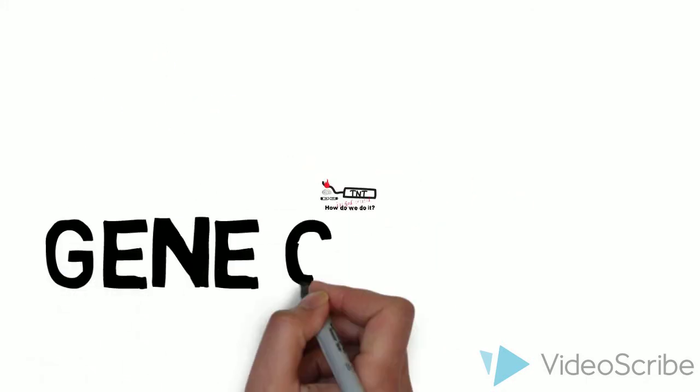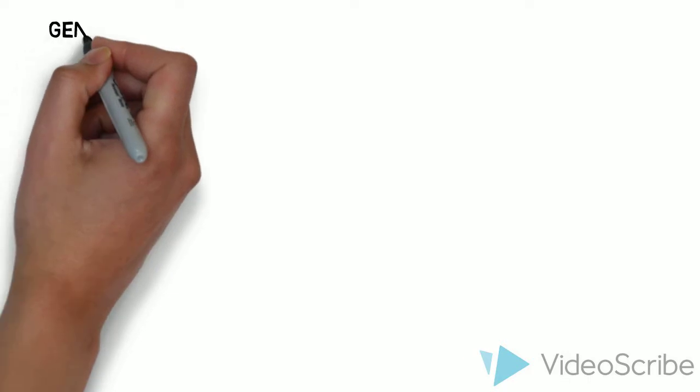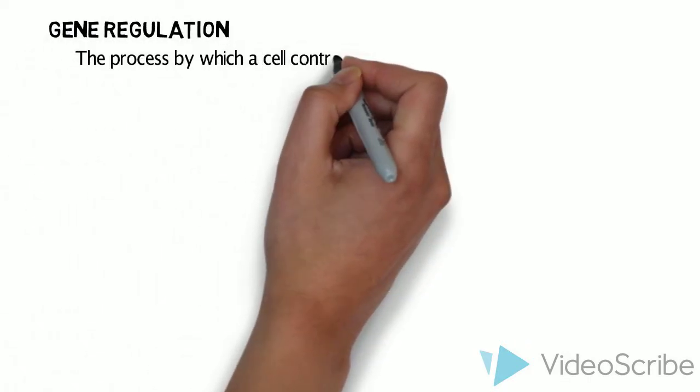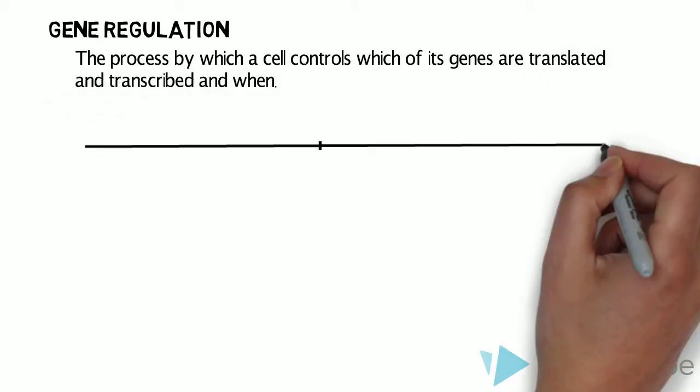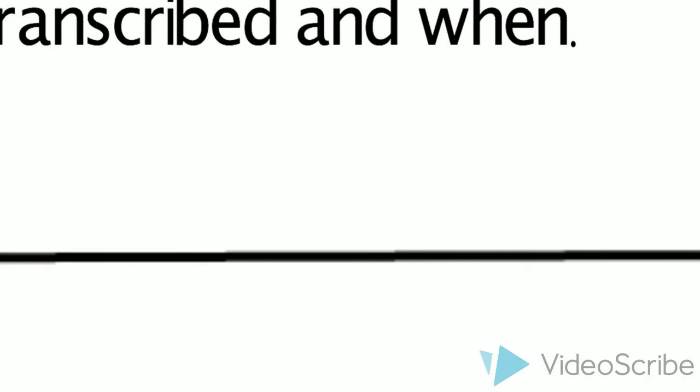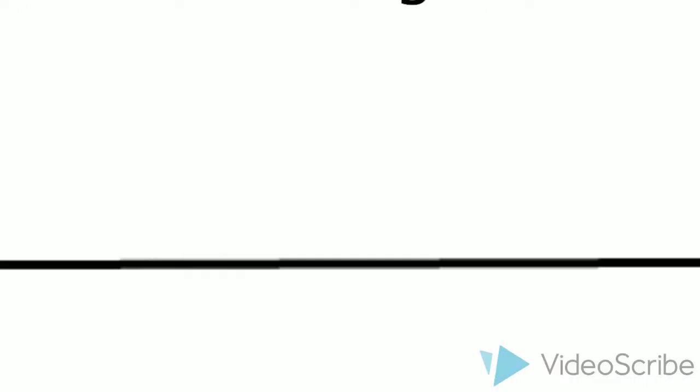This happens through a process called gene control, often also called gene regulation. It is the process by which a cell controls which of its genes are translated and transcribed and when. We are going to look at how this process takes place in prokaryotes and then briefly in eukaryotes.